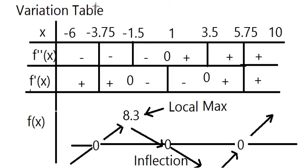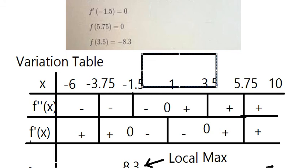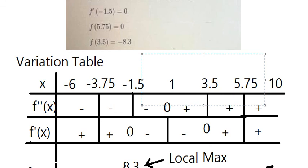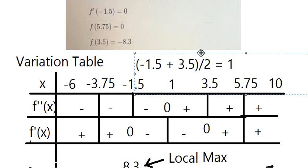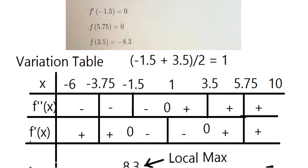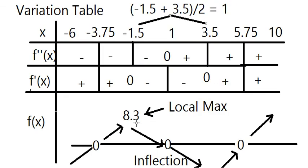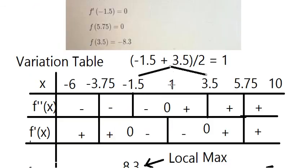Notice that when we take the two critical points together: minus 1.5 plus 3.5 divided by 2 gives 1. So the local minimum and local maximum are symmetric about x equals 1. This means we can find the function value at the inflection point — it should be 0.